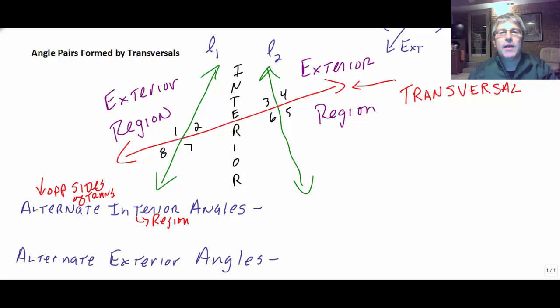And interior refers to the particular region. So you may have learned this before as opposite interior angles, meaning opposite sides of the transversal. We're going to call them alternate interior angles. And the alternate interior angles must be in the interior region and on opposite sides of the transversal. So our alternate interior angles would be 2 and 6.